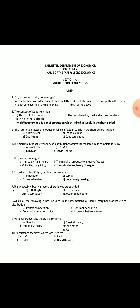Eighth question: Which of the following is NOT included in the assumptions of Clark's marginal productivity of distribution? Perfect competition, constant population, and constant amount of capital are all included. But 'labor is heterogeneous' is NOT an assumption — in this theory, labor is homogeneous. So the correct option is D.